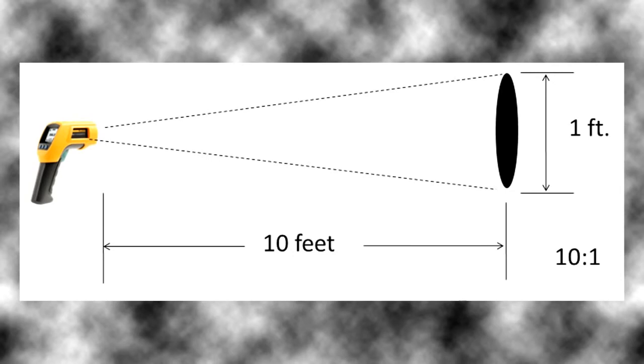For example, if we had a device with a ten to one distance to spot size ratio and we were ten feet from the target, we would take that ten feet divided by the ten to one ratio and that would give us a one foot diameter circle. So the laser would be pointed at the center of this one foot diameter circle and the IR thermometer would be measuring the average temperature of that one foot diameter circle.